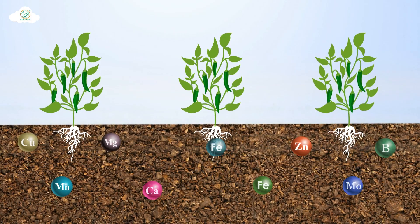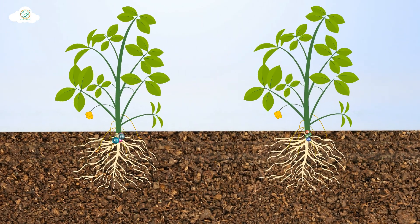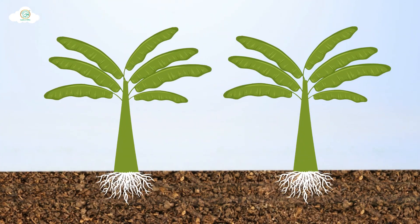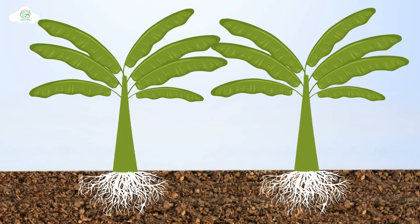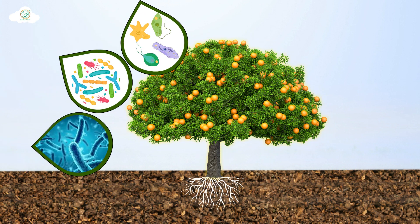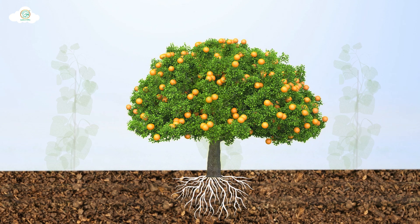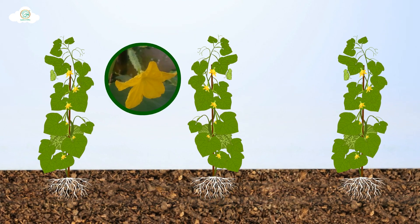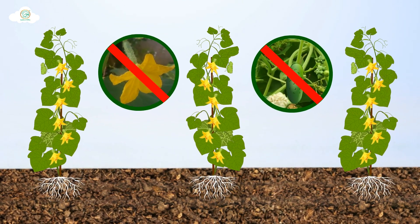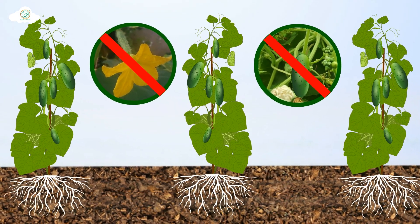Due to the EDTH chelated form, it easily absorbs and helps to fulfill the nutrient requirements of crops. It helps with uniform growth of plants and roots, and keeps crops healthy by increasing resistance to biotic and abiotic stress. As a result, uniform flowering occurs, with reduced problems such as blossom and fruit drop, and increased production.